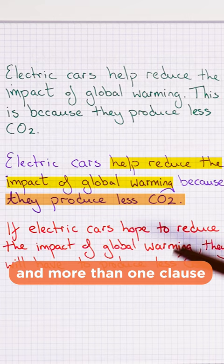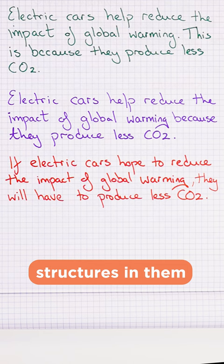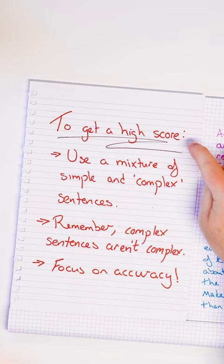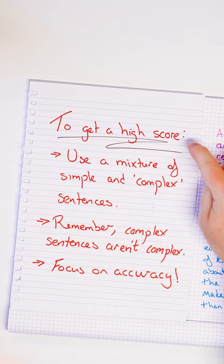Many students believe that complex sentences have complex grammar structures in them, like conditionals and future structures. But this simply isn't true. To get a high score, use a mixture of simple and complex sentences. Remember, complex sentences aren't complex — focus on accuracy.